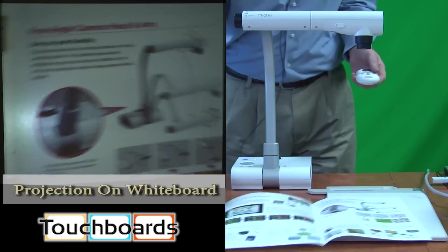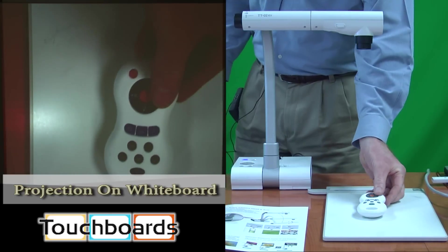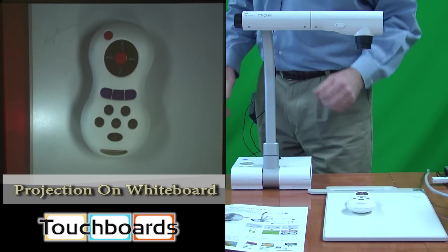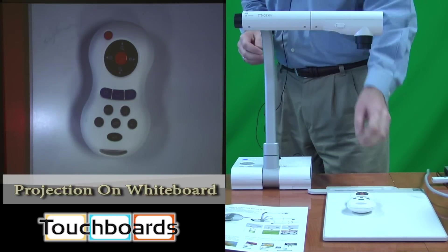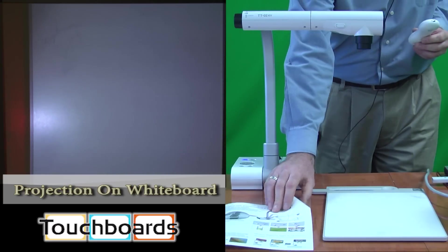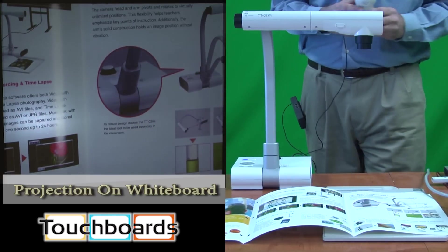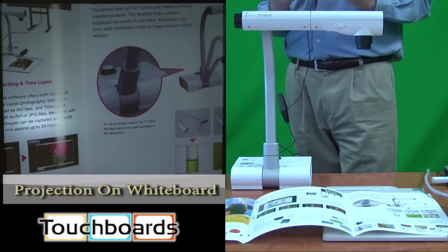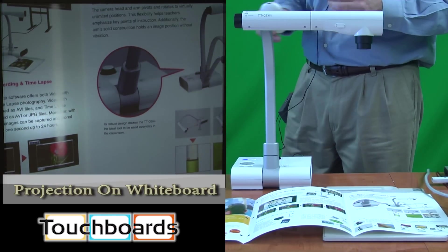The TT also comes with a very handy remote control, and I'll just put it up on the screen so you can see it in full detail. This allows us to change all of the menu settings for the camera, and also to highlight specific areas, unmask materials, much like you would do with an overhead projector.